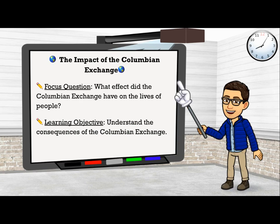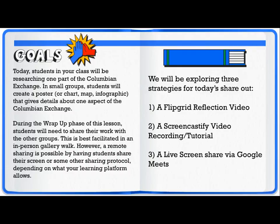The focus question for this lesson is: What effect did the Columbian Exchange have on the lives of people? The learning objective is to understand the consequences of the Columbian Exchange. Today, students in your class will be researching one part of the Columbian Exchange. In small groups, students will create a poster, chart, map, or infographic that gives details about one aspect of the Columbian Exchange.